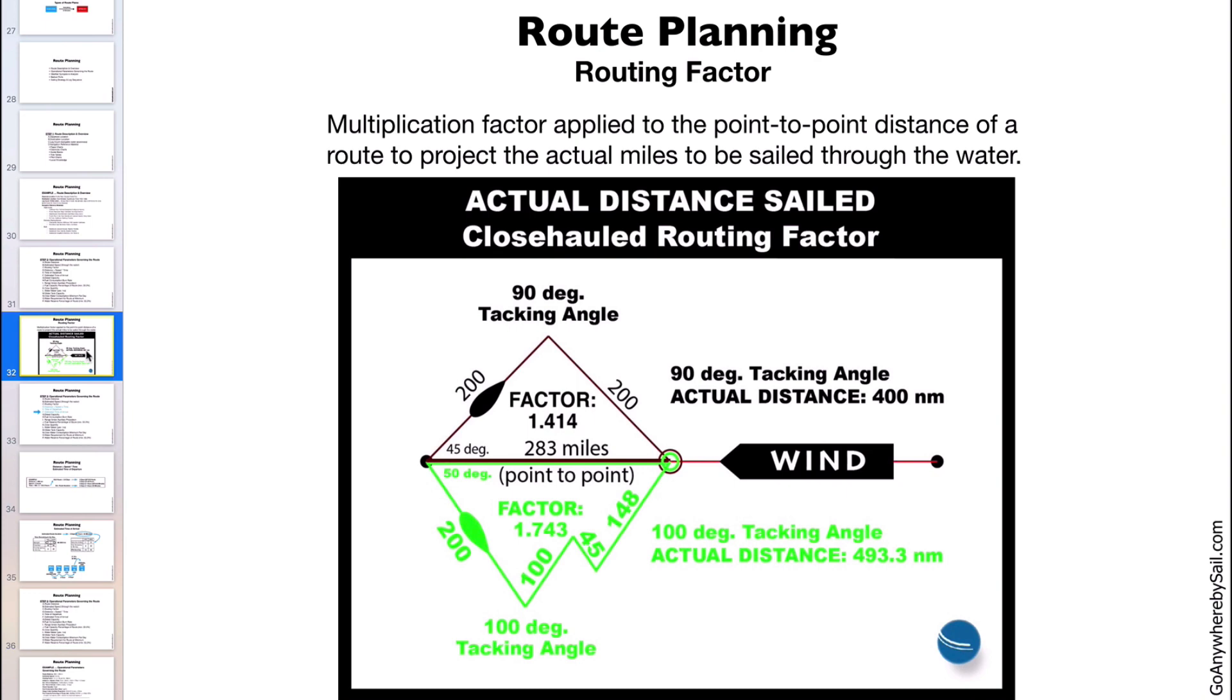So routing factor is a simplified effective way of coming up with the additional distance you're going to sail when you're going close-hauled. Some crews have a difficult time making a boat go close-hauled and keep it in the groove.